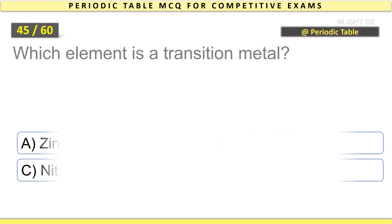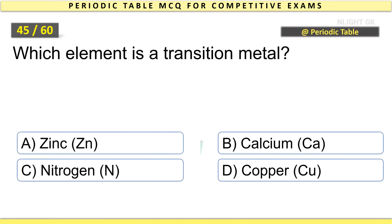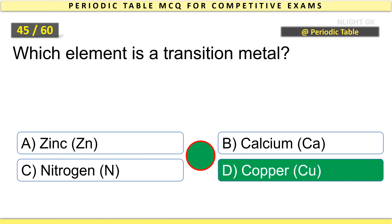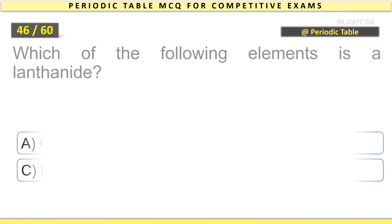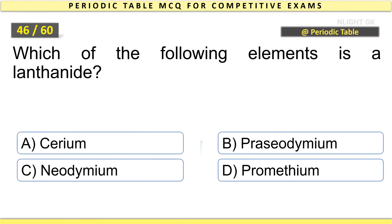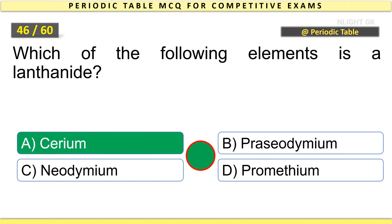Which element is a transition metal? Copper. Which of the following elements is a lanthanide? Cerium.